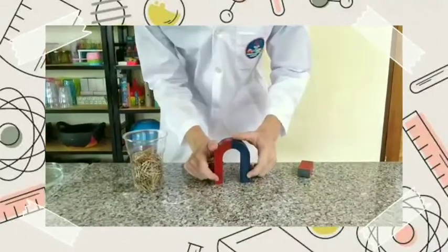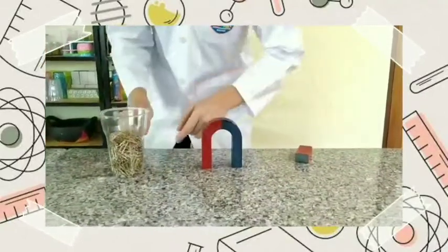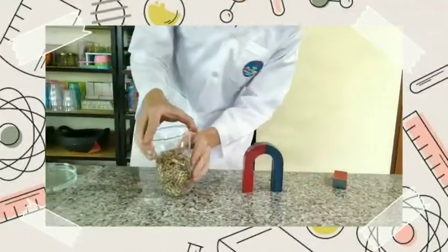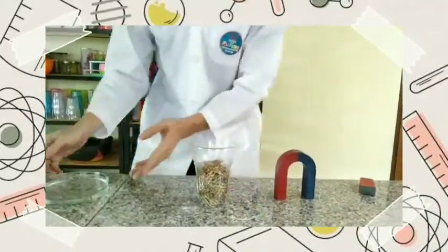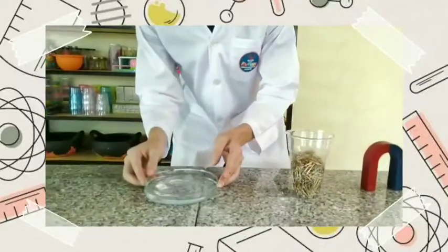We can see the letter N and S. We'll talk about that later. We also have a big cup full of paper clips and we have a small bowl with water.